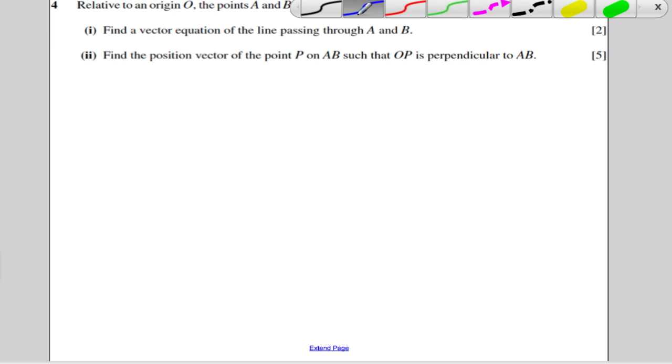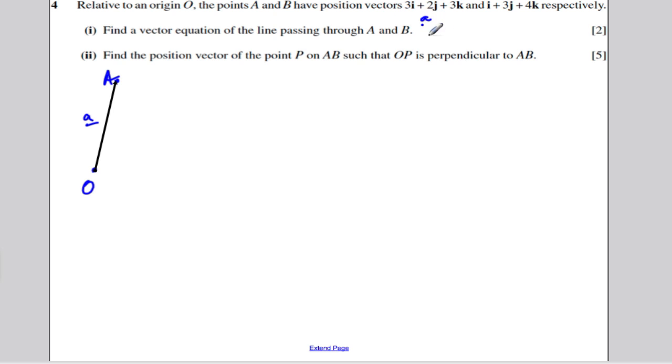So here's my origin O. Point A is, let's say, here, and that's the vector that gets you there. So there's the vector between O and A, and I'm going to call that little vector A. And this is little vector B.